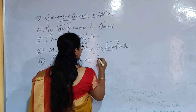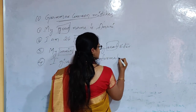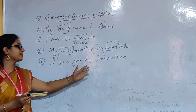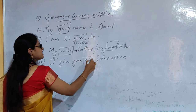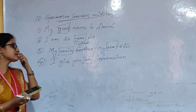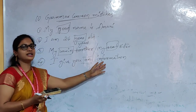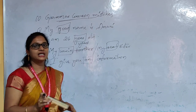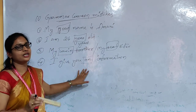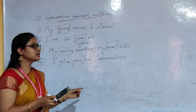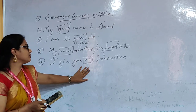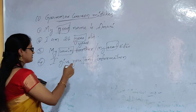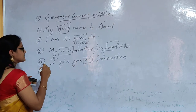Fourth mistake: 'I give you an information.' The use of the article 'an' here is wrong. 'Information' is an uncountable noun, and articles should not be used before uncountable nouns. That is a rule of the English language — articles never come before uncountable nouns. So stop using 'an information' and simply say 'I give you information.'